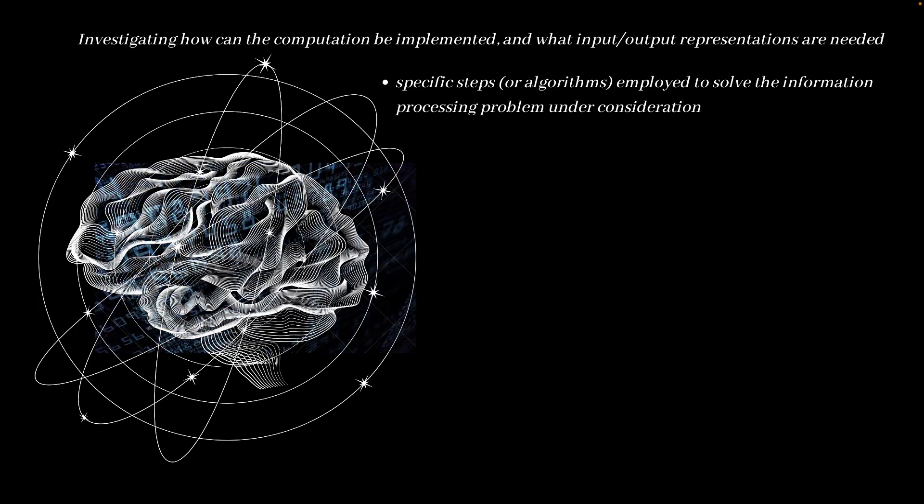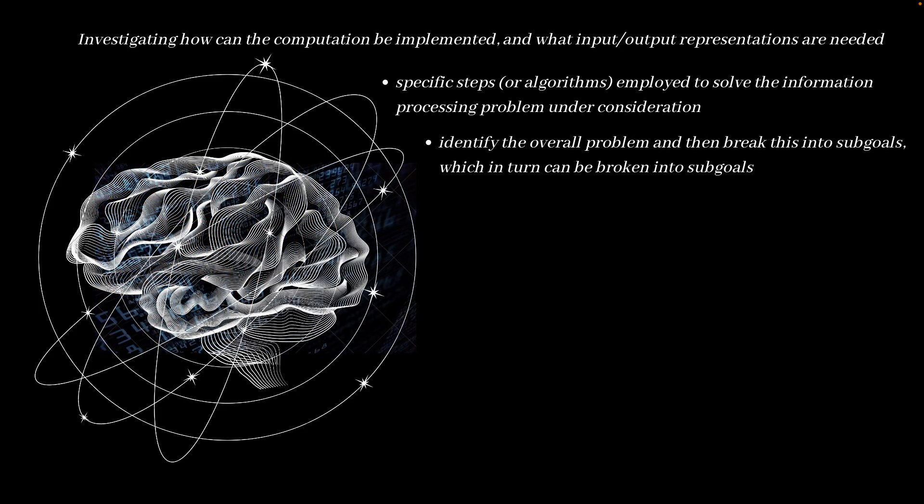In particular, the algorithmic level is concerned with how the input and output of the system are represented and how the input is transformed into the output. Within cognitive sciences, research at the algorithmic level is most often associated with work done by cognitive psychologists as well as psycholinguists. One approach describing an information processor at the algorithmic level, mostly from the cognitive psychology perspective, is to identify the overall problem and then break it down into sub-goals, which can in turn be broken down into sub-goals and so forth. Researcher Cummins in 1983 described this process as functional analysis.